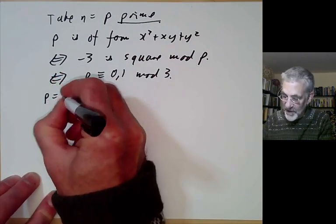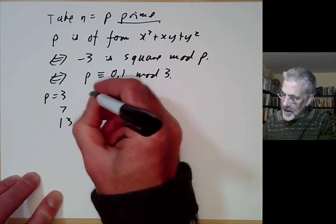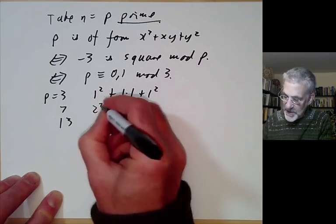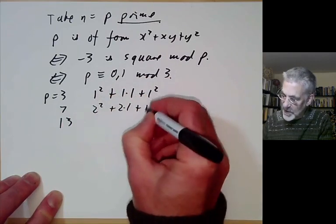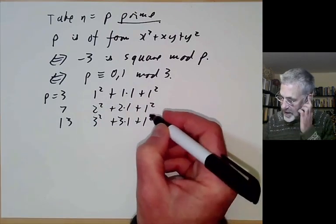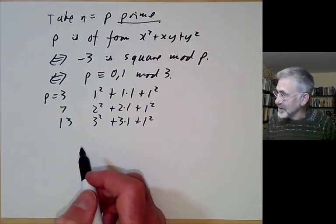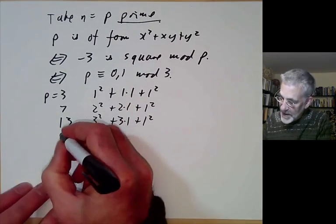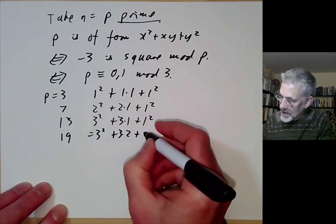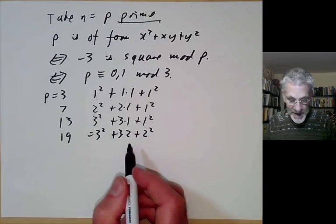Let's check a few examples. If p = 3: 1² + 1·1 + 1² = 3. If p = 7: 2² + 2·1 + 1² = 7. If p = 13: 3² + 3·1 + 1² = 13. And for p = 19: 3² + 3·2 + 2² = 19.